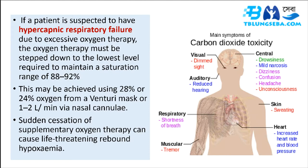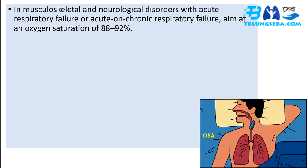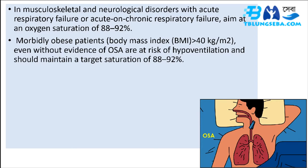In musculoskeletal and neurological disorders with acute or acute-on-chronic respiratory failure, aim at 88 to 92%. Morbidly obese patients, even without evidence of OSA, are at risk of hypoventilation and should maintain a target saturation of 88 to 92%. NIV should be considered for hypercapnic patients with COPD, CF, neuromuscular disorders, or morbid obesity who are at risk of hypercapnic respiratory failure if the pH is 7.35 or H+ is 45 nmol/L.